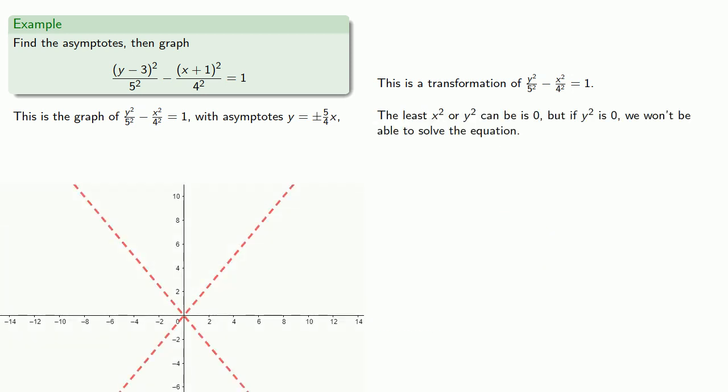Now we can continue as before. The least x squared or y squared can be is 0. But if y squared is 0, we won't be able to solve the equation. If we let x squared be 0, we find... So we know that 0, 5 and 0, negative 5 are on the graph.